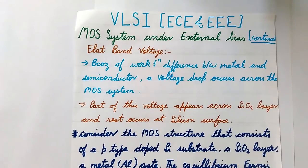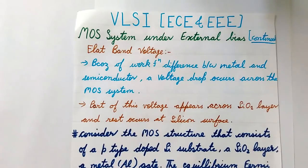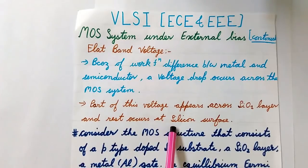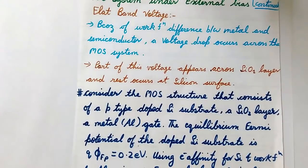Since the work function is different for the metal and the semiconductor, when these are brought together to form the MOS structure, this work function difference results in a voltage drop across the MOS system. This voltage drop partly appears across the SiO2 layer, and the rest can be seen at the silicon surface — which is the interface between the SiO2 layer and the substrate.